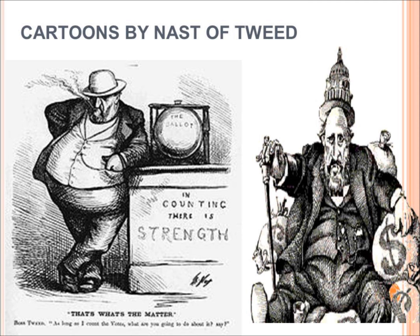Here are some more cartoons by Nast of Tweed. In the one on the left, he looks very sketchy — smoking a cigarette, looking very powerful. On the right is 'The Ballot: In counting there is strength' — 'That's what's the matter,' it says on the bottom. The people counting the votes worked for Tammany, so was there any way Tammany didn't win these elections? In another image, you see Tweed once again fat, money all around him showing the greed. And on his head is the Capitol. What does that symbolize? What does that say about Tweed and his power? We're going to talk about that.